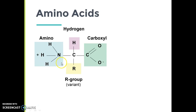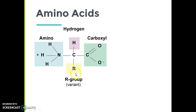All amino acids have similar structures: a central carbon atom, an amino group characterized by nitrogens with hydrogens, a carboxyl group which is a carbon with a double-bonded oxygen and a single-bonded oxygen. There's additionally a hydrogen group, and what makes each of the 20 amino acids different is this variable R group. R just represents something random that can hang off the side.